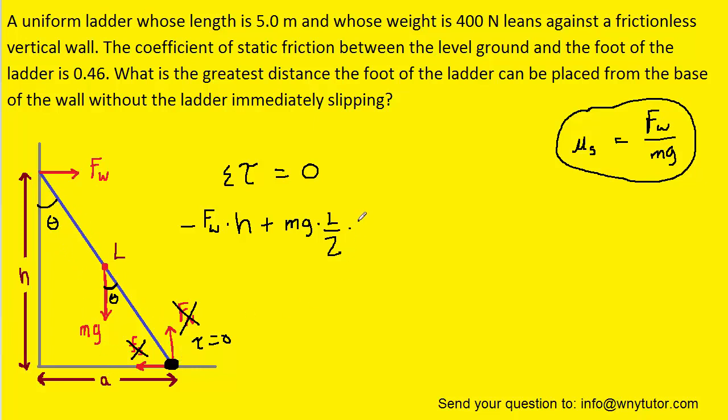So we can actually replace the sine of that angle with A over L. The L's would cancel, leaving us with mg times A over 2. We can see that the mg force is pulling down on the ladder, and that would try to cause the ladder to rotate in a counterclockwise fashion about the pivot. So this torque remains positive.